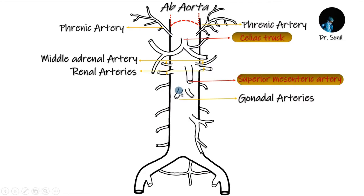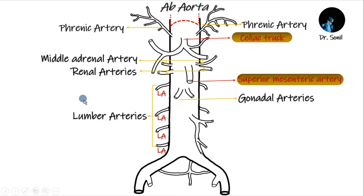Also the gonadal artery, starting from L2 — ovarian artery in females and testicular artery in males. And also lumbar arteries, starting from L1 to L4, four on each side, that supply the abdominal wall and spinal cord.